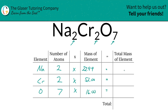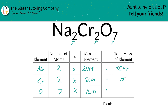Then what we're going to do is find the total mass of the element by simply multiplying the number of atoms by the mass of the element. So the total mass of sodium will be 45.98. Chromium is 104. We'll align the decimals. And then oxygen is going to be 112.